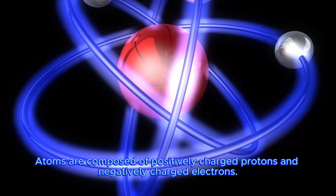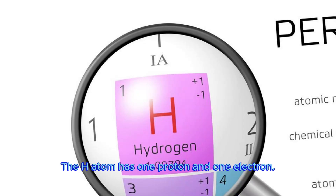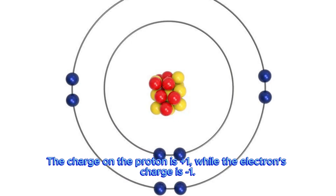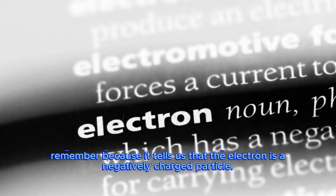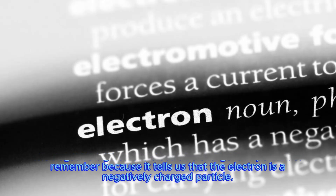Atoms are composed of positively charged protons and negatively charged electrons. The H atom has one proton and one electron. The charge on the proton is plus one, while the electron's charge is minus one. The negative sign on the electron's charge is important to remember because it tells us that the electron is a negatively charged particle.